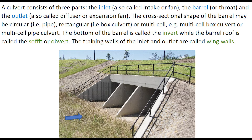A culvert consists of three parts: the inlet, the barrel, and the outlet. The cross-sectional shape of the barrel may be circular, rectangular, or multi-cell — a multi-cell box culvert or a multi-cell pipe culvert. The bottom of the barrel is called the invert, and the barrel roof is called the soffit or obvert.